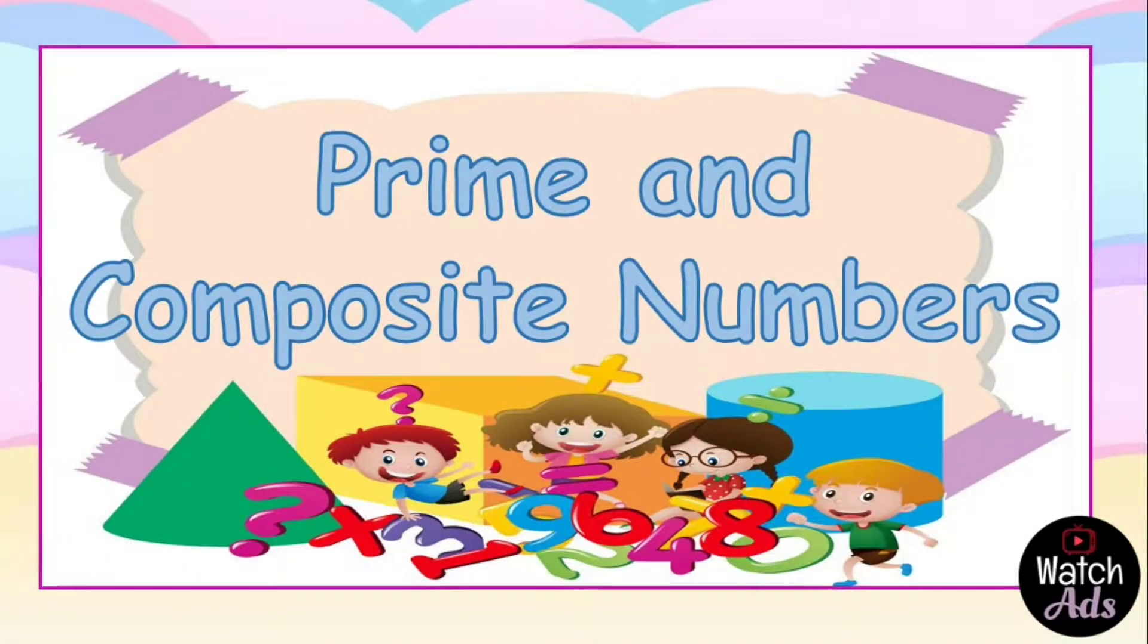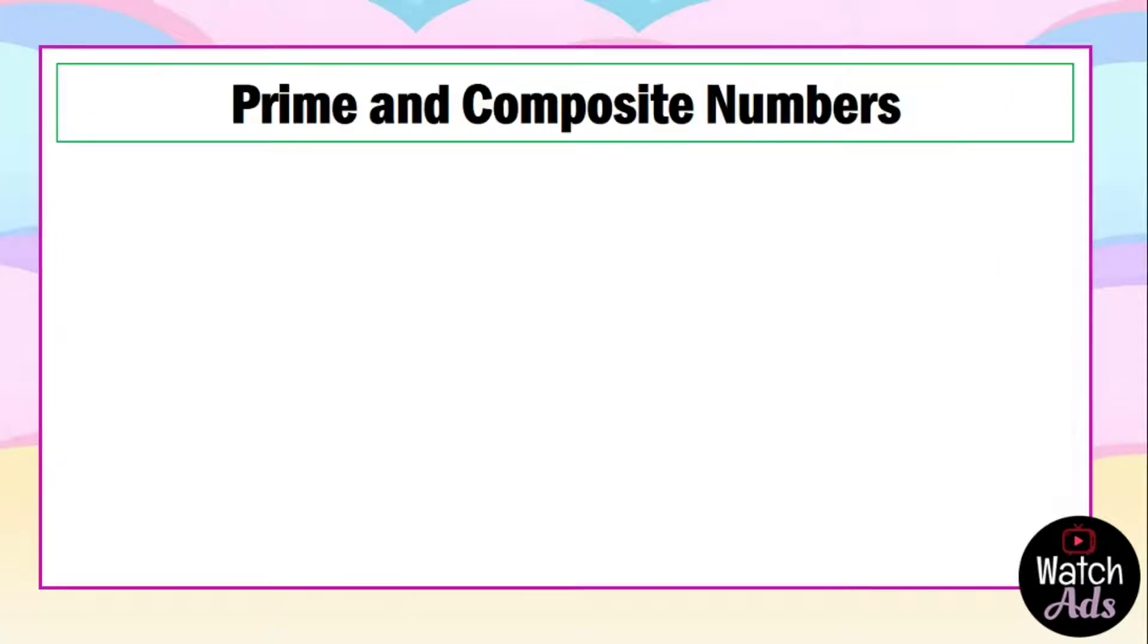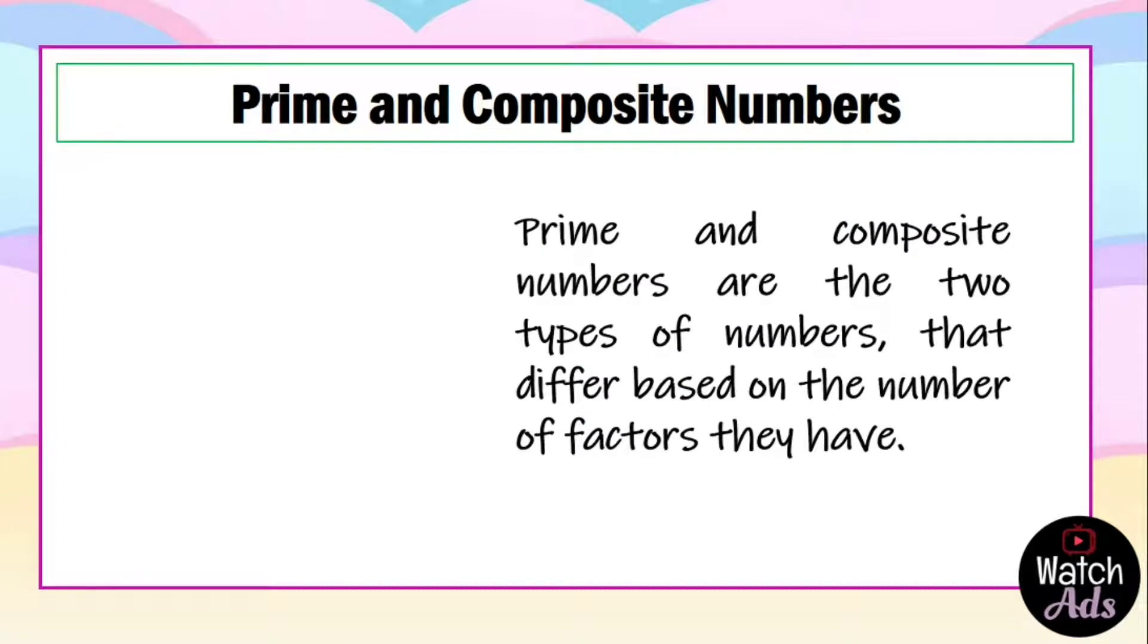Welcome back everyone, and today we are going to talk about prime and composite numbers. Prime and composite numbers are the two types of numbers that differ based on the number of factors they have.